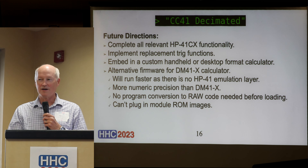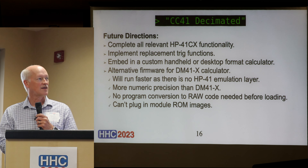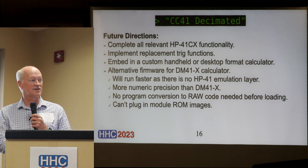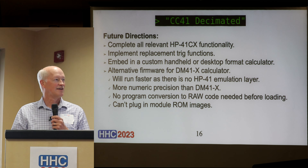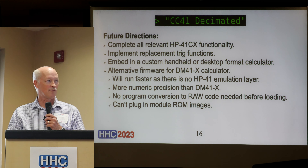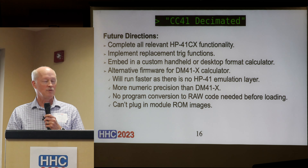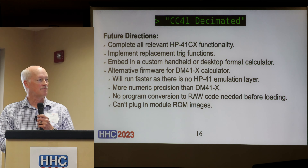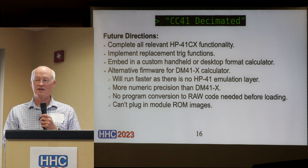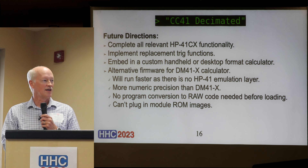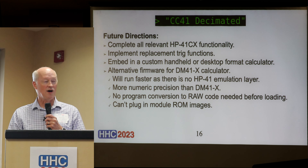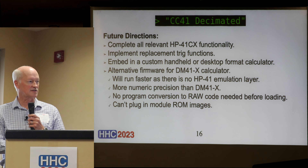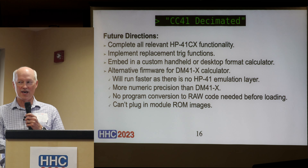Other future directions include completing all relevant 41CX functionality, implementing replacement trig functions, and potentially embedding CC41 in a custom handheld or desktop calculator format. It could serve as alternative firmware for the DM41X, running faster since there's no HP41 emulator involved, with more numeric precision, no program conversion to RAW needed — it would just load a text file from the USB file system. A drawback is you can't plug in ROM images.